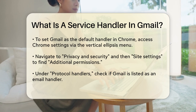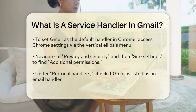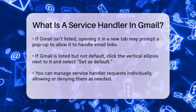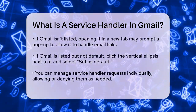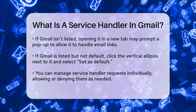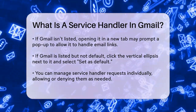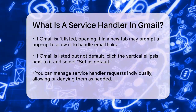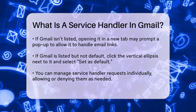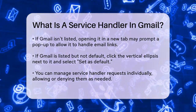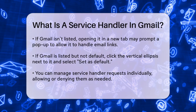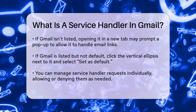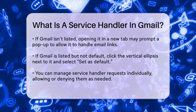In this section, you'll see if Gmail is already listed as an email handler. If it's not, you can open Gmail in another tab, and it might trigger a pop-up asking if you want to allow Gmail to handle email links. Click Allow to set it as the default handler. If you see Gmail listed but it's not set as the default, you can click the vertical ellipsis next to it and select Set as Default. This ensures that any email links you click will open in Gmail.